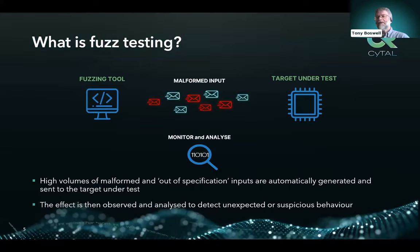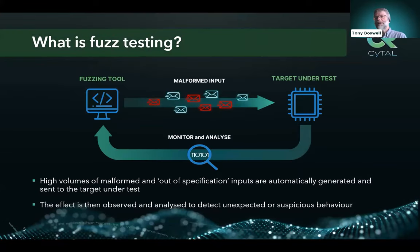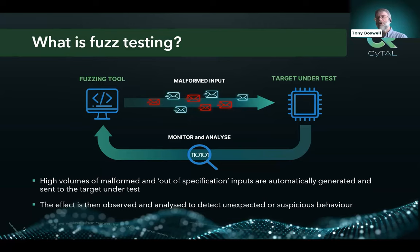As a brief recap: fundamentally fuzzing is where a tool — in our case proto-crawler — automatically generates huge volumes of deliberately and carefully malformed and out-of-specification messages that are then sent to the target. We observe the behavior through the tool, gather evidence of what happens when those malformed messages are processed, collect it all, and then automatically analyze it looking for unexpected or suspicious behavior from the target.